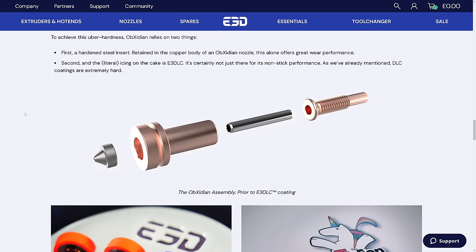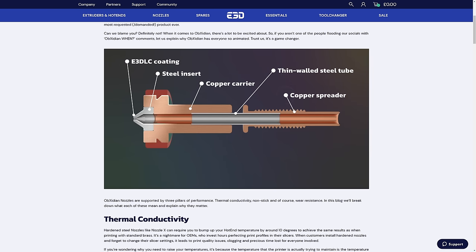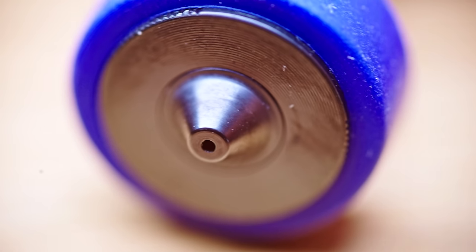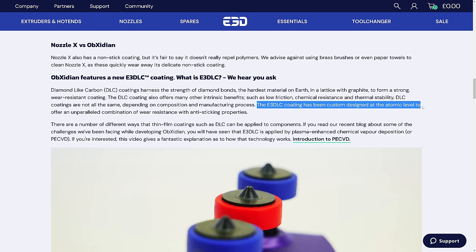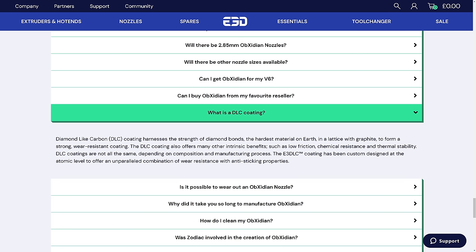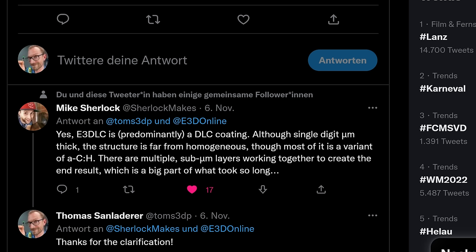Instead, the Obxidian uses a hardened tool steel insert, pressed into a copper body, and then all of that is coated with what they call E3 DLC. Their materials seem to be a bit reluctant in actually explicitly saying that the E3 DLC is an actual diamond-like carbon coating, as the name would imply. So I asked them and they confirmed that it's mostly a diamond-like carbon coating, but their design goals for their version of the DLC seem to be a bit different from what you would typically tune that coating process for.